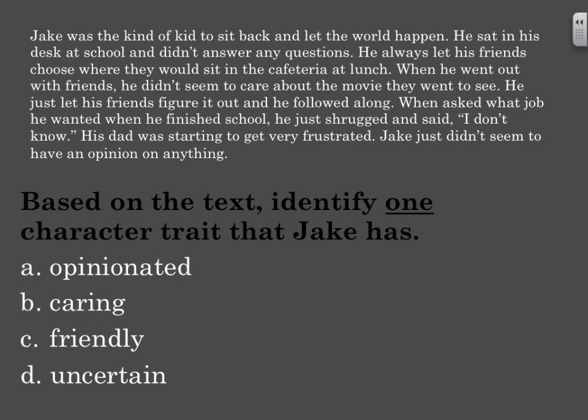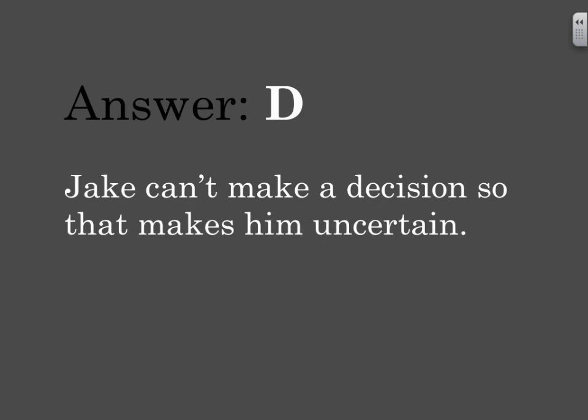Based on the text, identify one character trait that Jake has. A — opinionated. B — caring. C — friendly. Or D — uncertain. Jake isn't opinionated because he doesn't have an opinion in the text. There's no evidence in the text that he is caring. And although Jake has friends, he doesn't show behavior that would indicate he is friendly. That is why the best answer is D — Jake can't make a decision, so that makes him uncertain.